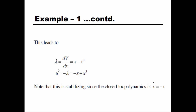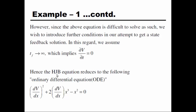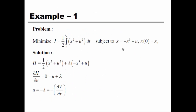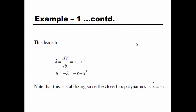Substituting back, the optimal control is u* = -x + x³. Substituting this into the plant equation ẋ = -x³ + x³ + u*, the cubic terms cancel and we are left with ẋ = -x, so the gain value is -1. Thank you for watching; I hope this video is helpful. If you have any questions, please leave them in the comments.